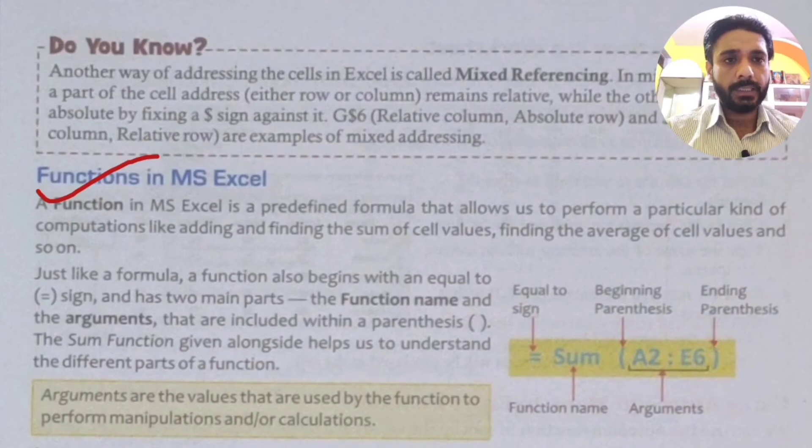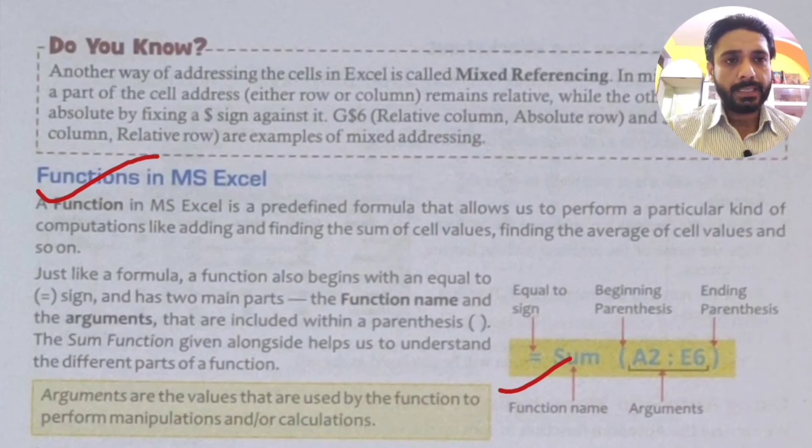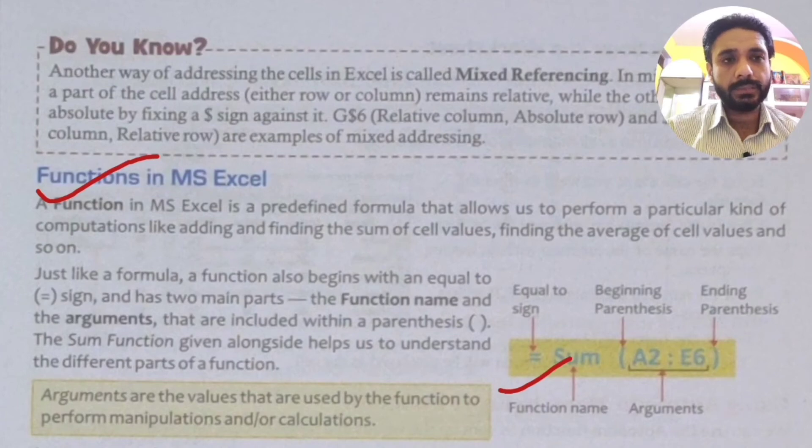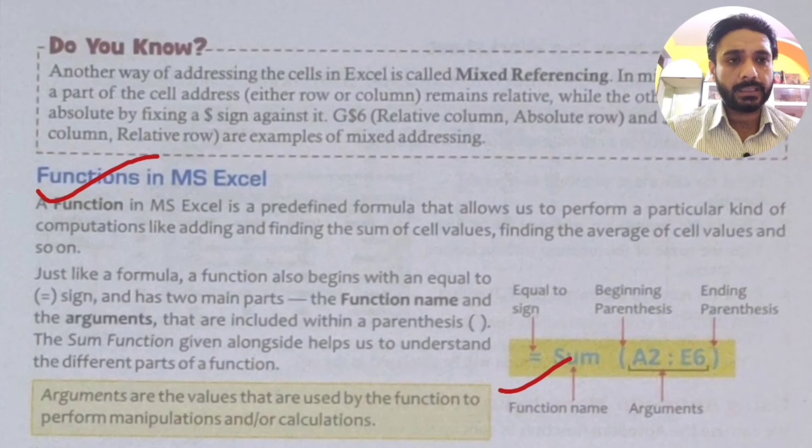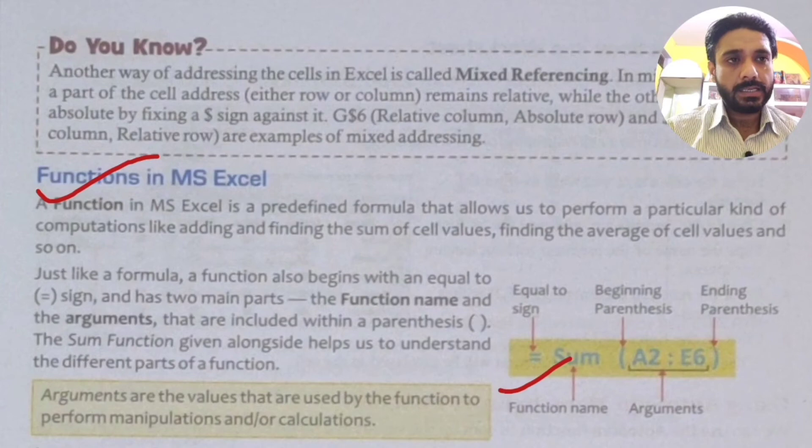First of all, we use equal sign. Then we write the function name. Then, beginning parentheses, arguments and ending parentheses. So we will open and close. We will write the arguments. So if we have a function use, such as sum, then we will implement which cell to which cell we want to implement. If I have A2 colon E6 written, then A2 to the E6 cell will show the values. It will show the summation to my resultant cell.